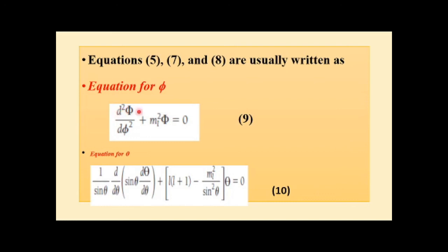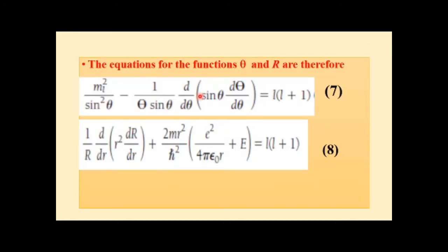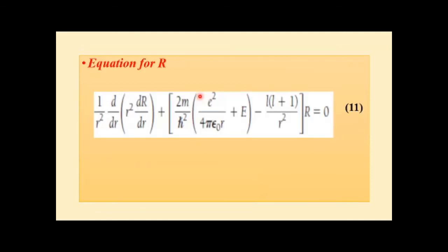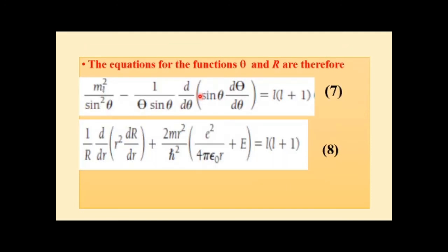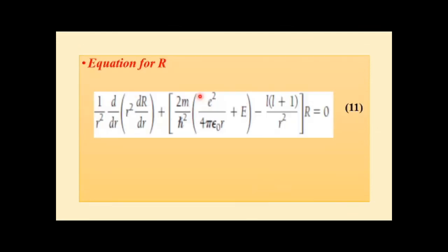From these separations we obtain the equation for Phi: d²Φ/dφ² + ml²Φ = 0. We also obtain the equation for Theta: (1/sinθ)(d/dθ)(sinθ dΘ/dθ) + [l(l+1) − ml²/sin²θ]Θ = 0, which is equation 10. Rearranging equation 8 gives equation 11 for the radial function R.